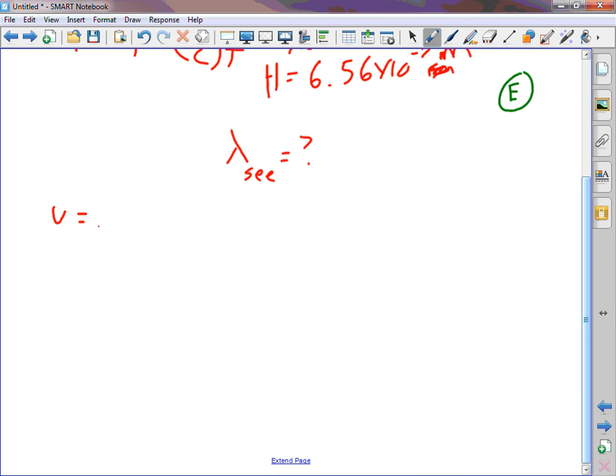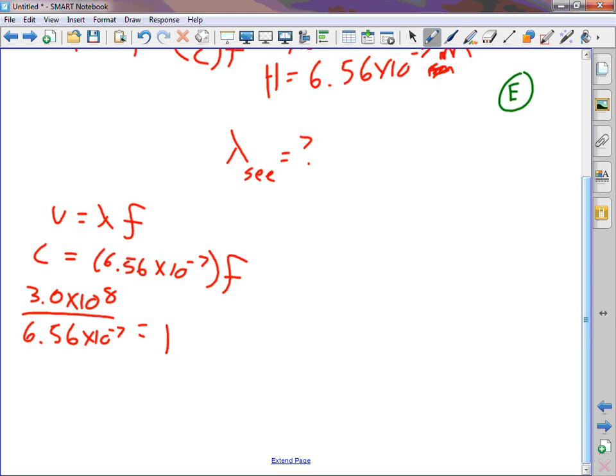Now, first off, we have an issue. We don't want wavelength. What do we want? We want frequency. We actually want frequency. So, I need to get from wavelength to frequency. How do I do that? Yeah, v equals lambda f. That's c equals my 6.56 times 10 to the negative 7 f, right? This is just for light. We're trying to get the frequency of the light.